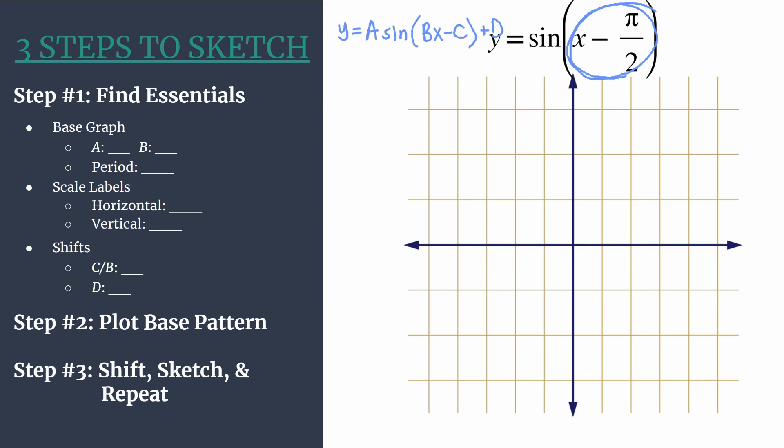We know we are using the advanced method so let's go ahead and jump in. We'll start with step one: find the essentials. We'll get our base graph first and we need to identify A and B for that. So A is an understood one, it's the leading coefficient.